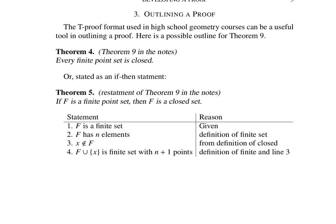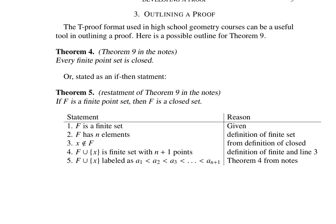But now it has n plus 1 points. Since that union is finite, we can apply theorem 4 from the notes. That says we can order that set. We can label them and order them in this way.